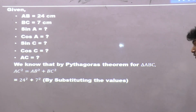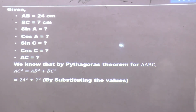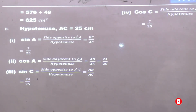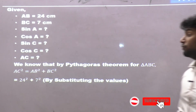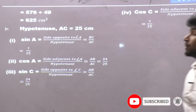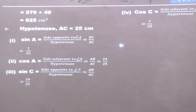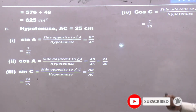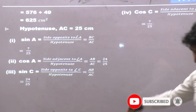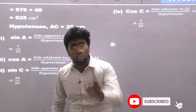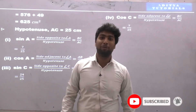We know that by the Pythagorean theorem for triangle ABC, AC square equals AB square plus BC square. Substituting the values: 24 squared plus 7 squared gives 576 plus 49, that is 625 cm squared. Taking square root, we get AC equals 25. Hence, substituting the values of AB below, we get the final answers. If you like it, do share, subscribe. Thank you.